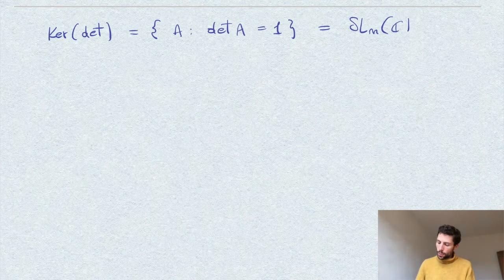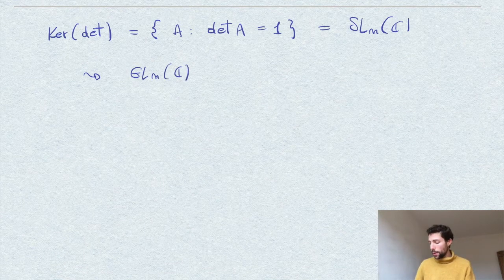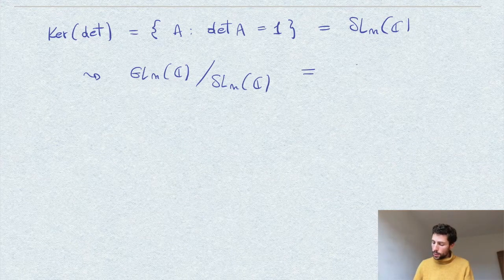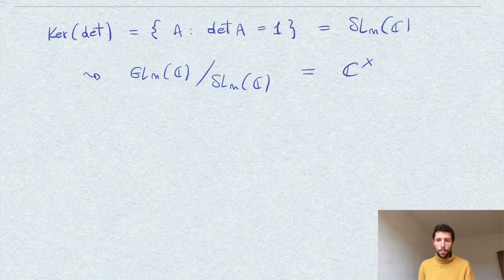And in particular, we get that GL_n(C), this general linear group quotiented by SL_n(C), is the so-called punctured complex plane.